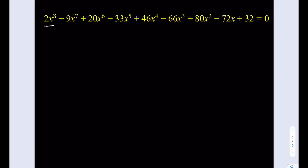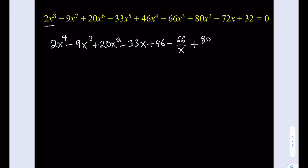I'm going to start with the first term, which is 2x to the 8th, and divide it by x to the 4th. When I divide this first term by x to the 4th, I'm going to be getting 2x to the 4th, and then minus 9x cubed plus 20x squared minus 33x plus 46 as a constant. Then starting with the x cubed term, we're going to be getting some reciprocals. For example, this term is going to be 66 divided by x, and then 80 divided by x squared minus 72 divided by x cubed, and finally 32 divided by x to the 4th power, and all that is equal to 0.